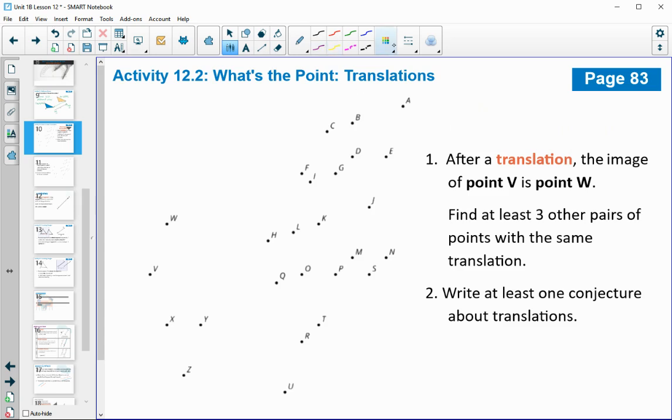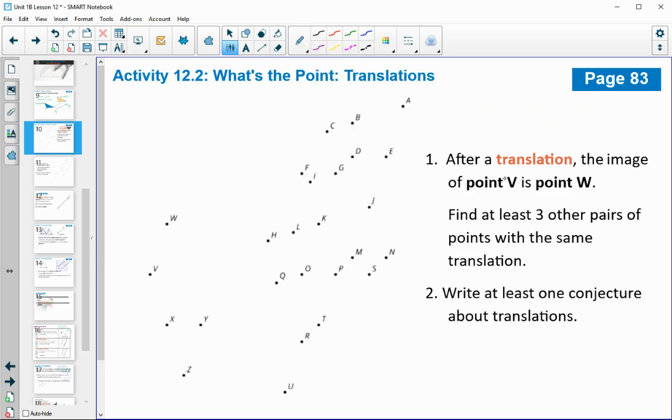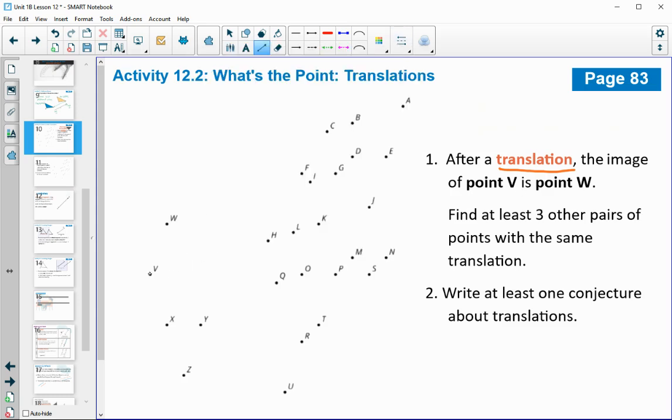In number one, it says that there's been a translation that has taken point V to point W. So what I want you to do in your book is I want you to connect those with a ruler, and I want you to draw an arrow from V to W.